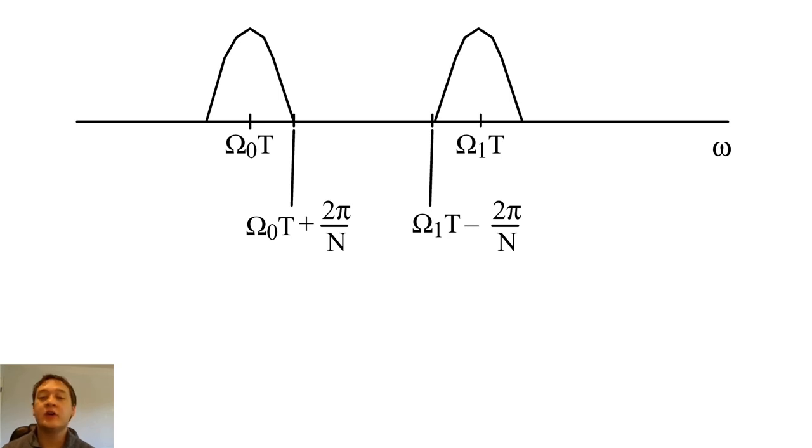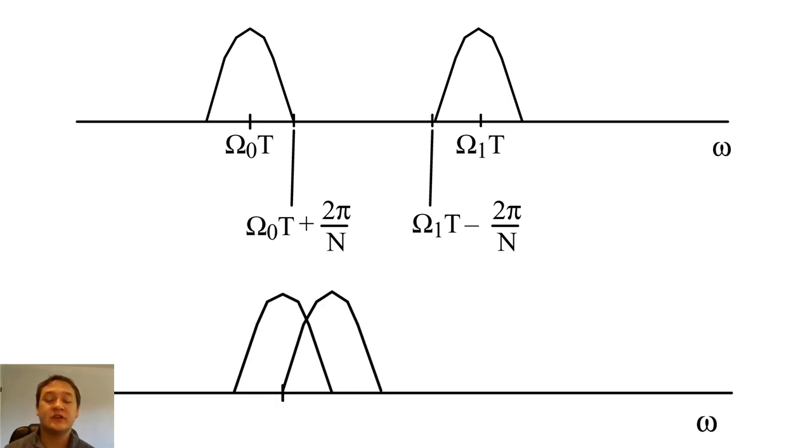When these main lobes are far apart, we can easily tell that there are two cosines. If these cosines are too close in frequency, their main lobes will overlap significantly.